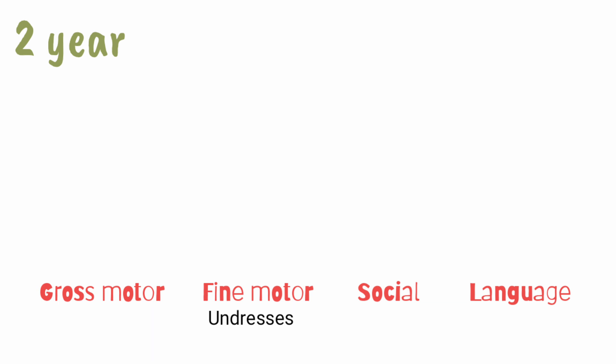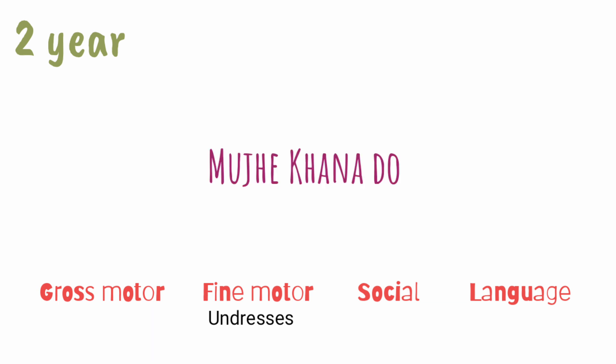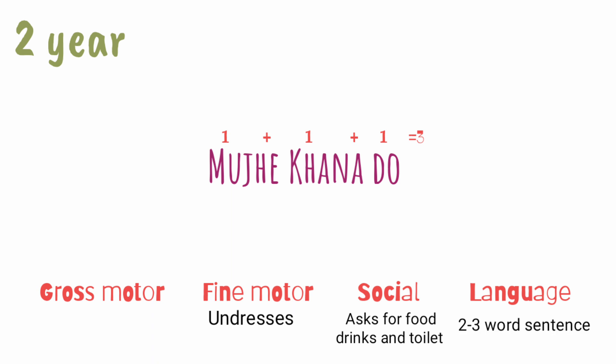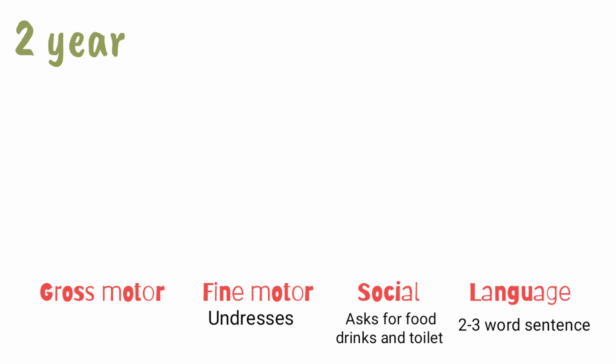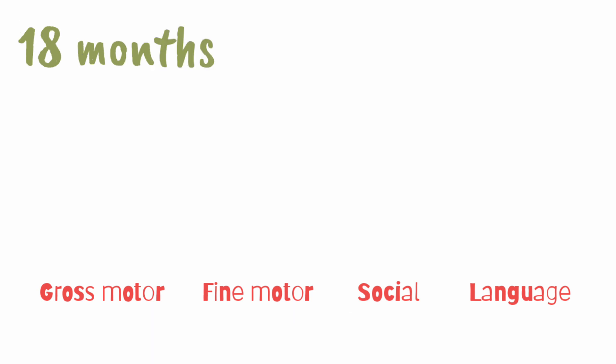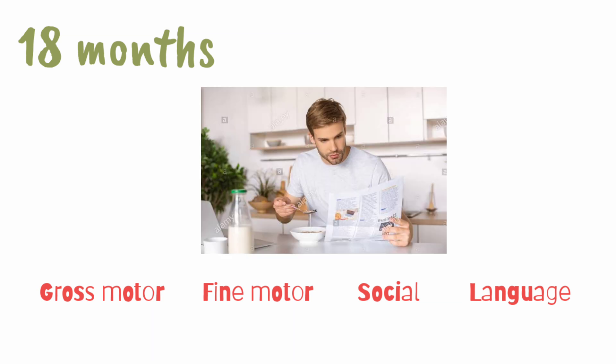For the two-year age group, remember that 'two' is 'do' in Hindi. A boy undresses himself, goes to his mother, and says 'mujhe khana do' (give me food). From this simple sentence you can remember all milestones under two years: under social — he asks for food and drinks; under language — he can speak two-to-three word sentences; under fine motor — he can undress himself. In another part of the story, when the mother does not bother, the boy says he is leaving home, but the mother knows he can only walk up and down stairs two feet per step, so he is very slow and she can catch him easily.